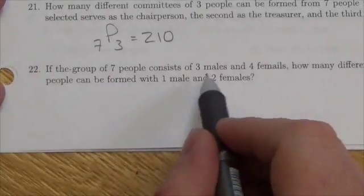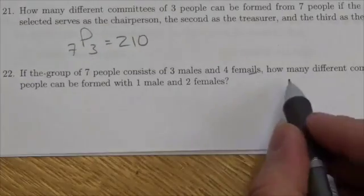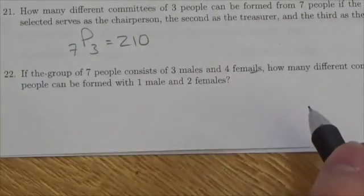If the group of seven people consists of three males and four females, how many different committees of three can be formed with one male and two females?